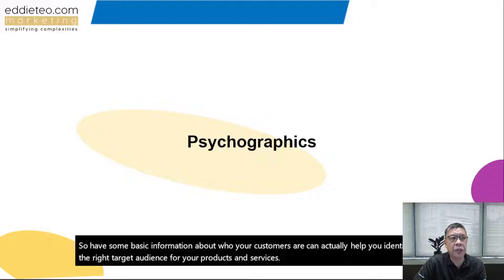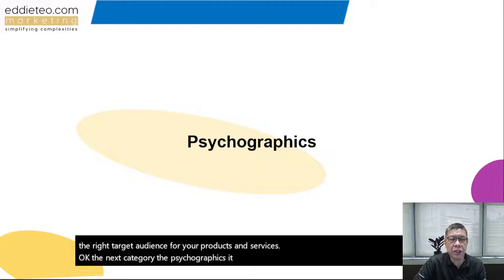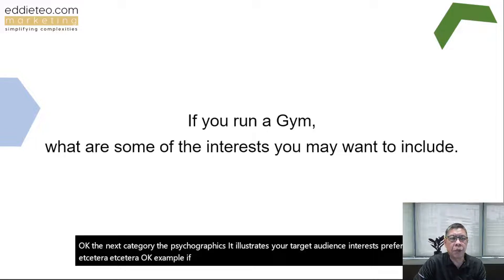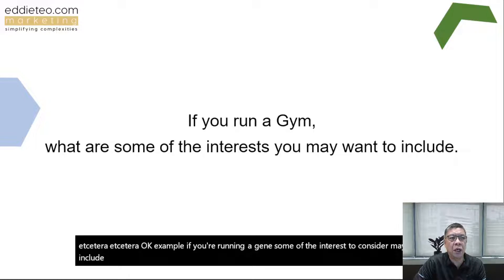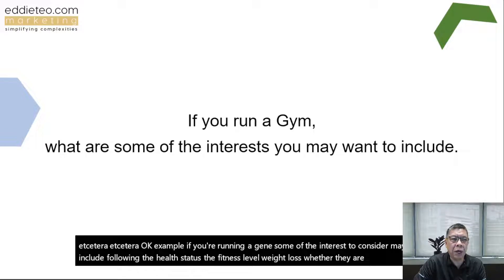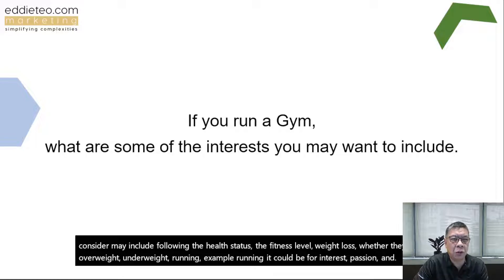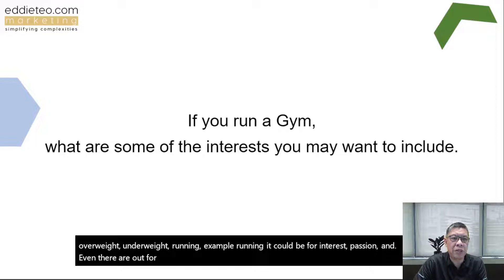The next category is psychographics, which illustrates your target audience's interests, preferences, and so on. For example, if you are running a gym, some of the interests to consider may include health status, fitness level, weight loss, whether they are overweight or underweight, and running — whether it's for interest, passion, or to prep for competition.